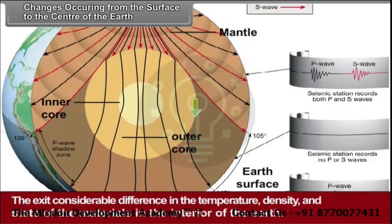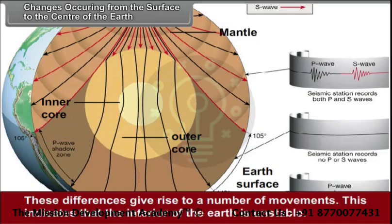There exist considerable differences in the temperature, density, and state of the materials in the interior of the earth. These differences give rise to a number of movements. This indicates that the interior of the earth is unstable.